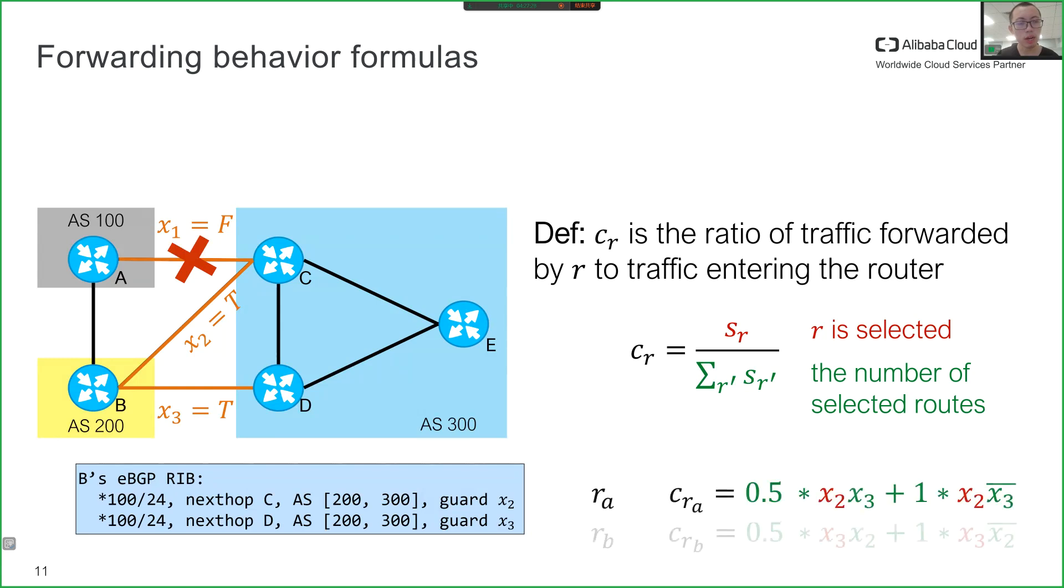We use RA and RB to denote the two routes at router B. As an example, we explain the meaning of CRA. If both routes exist, 50% of traffic would be forwarded by the first path. However, if only the first route exists, 100% of traffic will be forwarded by that route.